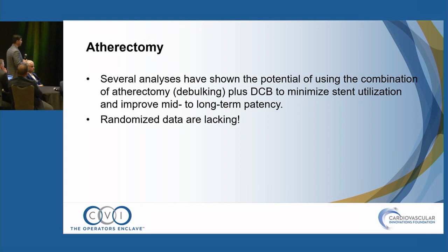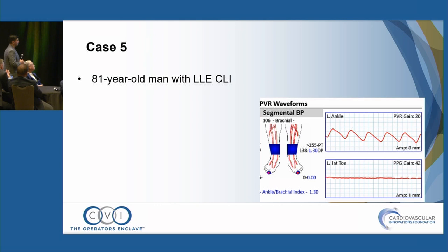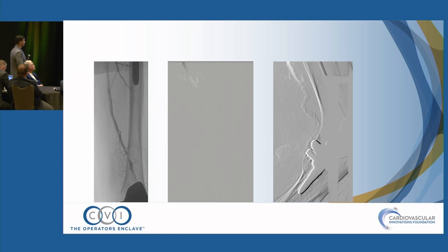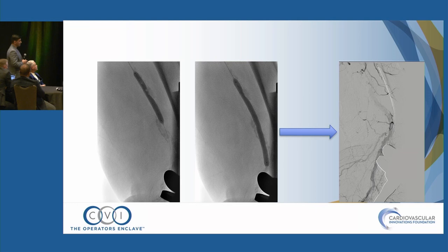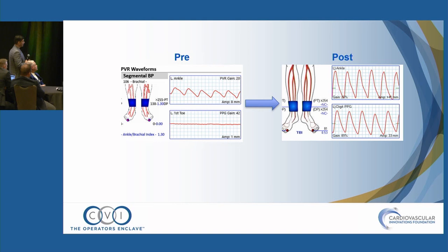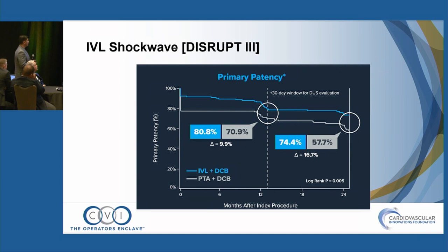Last case: 81-year-old with left lower extremity CLI, flat toe waveform, hardware present in a frog position, and horrifying calcium. No-brainer — shockwave IVL. There was still a residual of 50% stenosis, but I decided not to place a stent given the small gangrene of the right great toe, and the flow did not appear limiting. His waveform was very surprising on the second day as an inpatient. Unfortunately, this patient died three months later from a heart attack. Shockwave one-year randomized data shows higher primary patency with IVL plus DCB versus PTA and DCB alone — 75% versus 57% at two years.